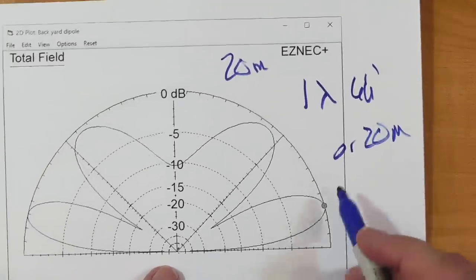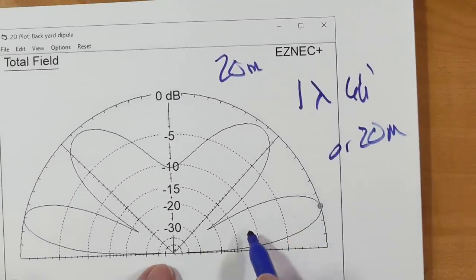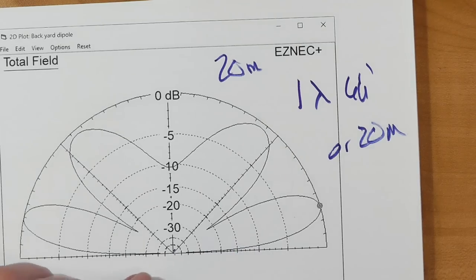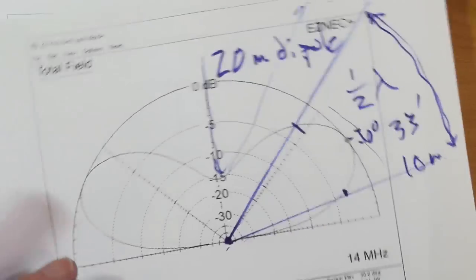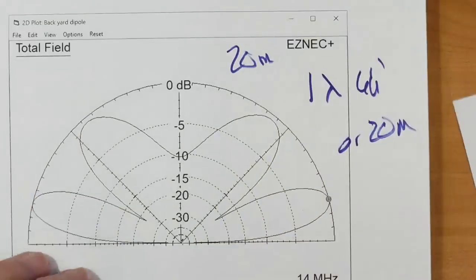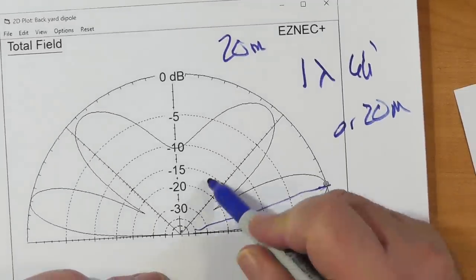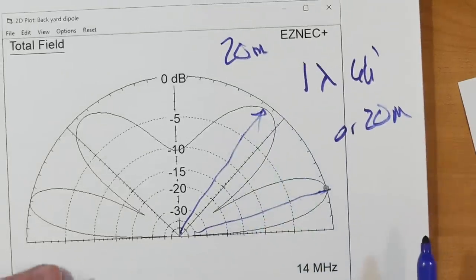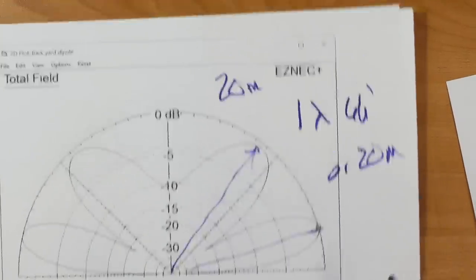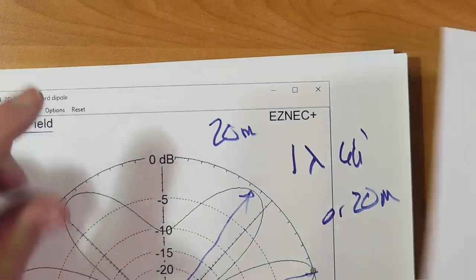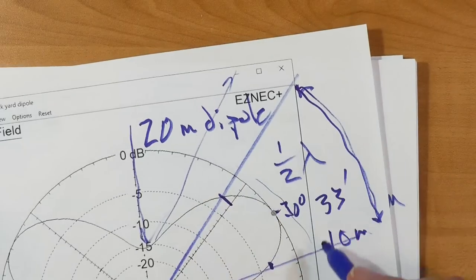Now, you have what I call lensing. The lobe that's here breaks into two. You've got this lobe here, and this lobe here. So you're just running 100 watts, say.